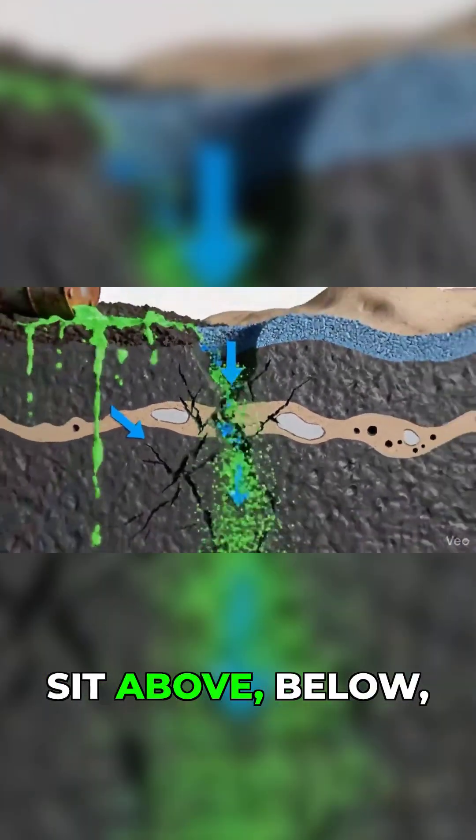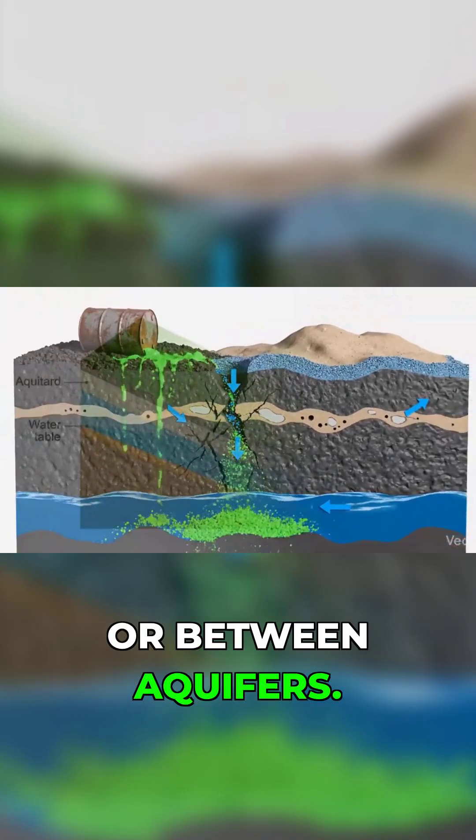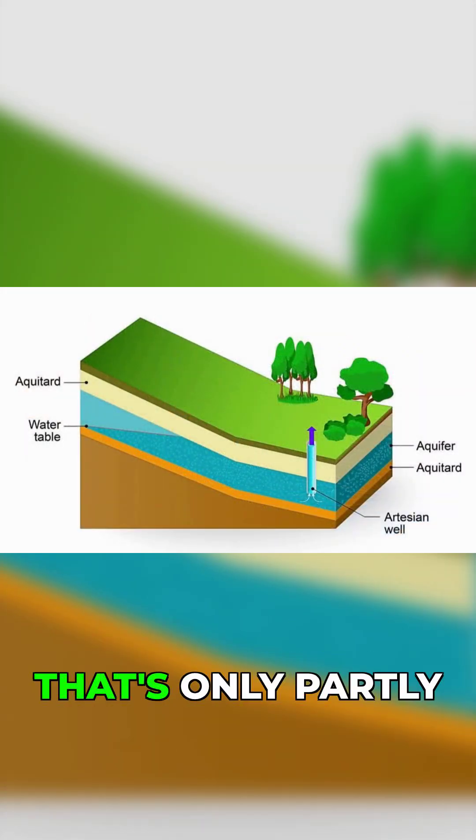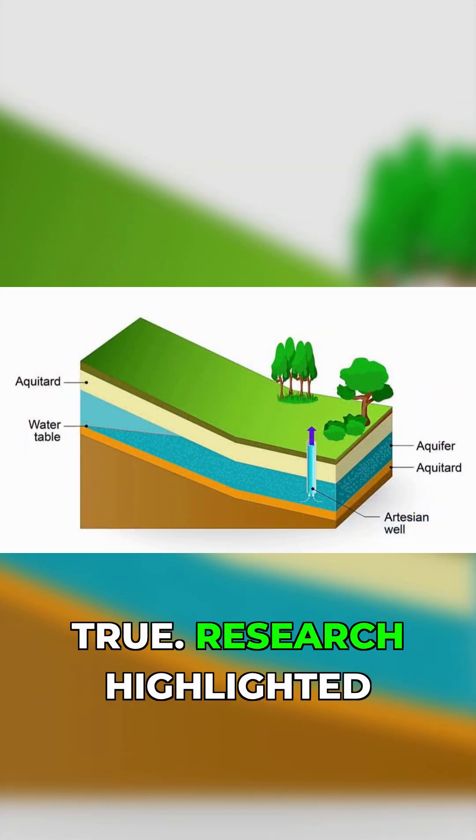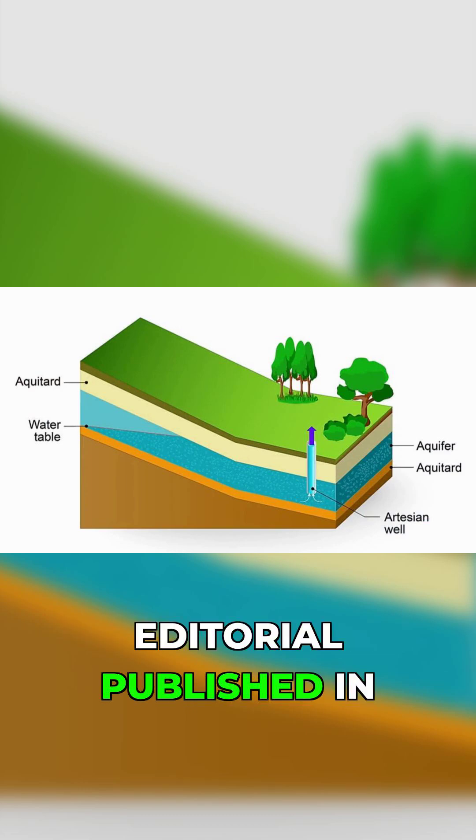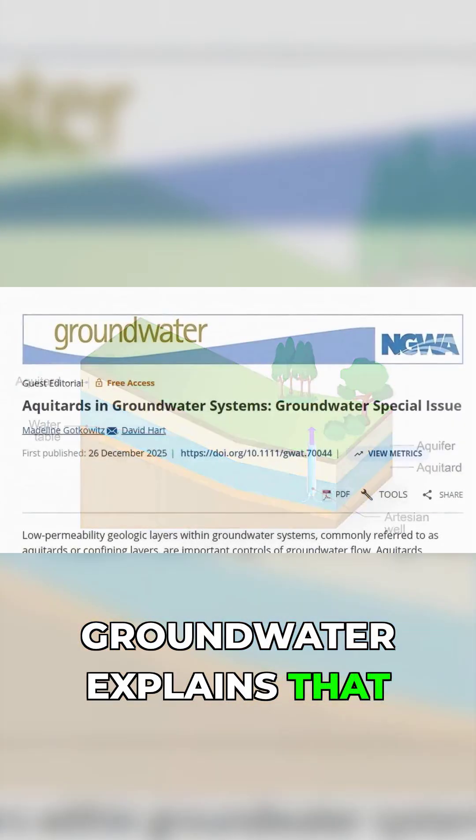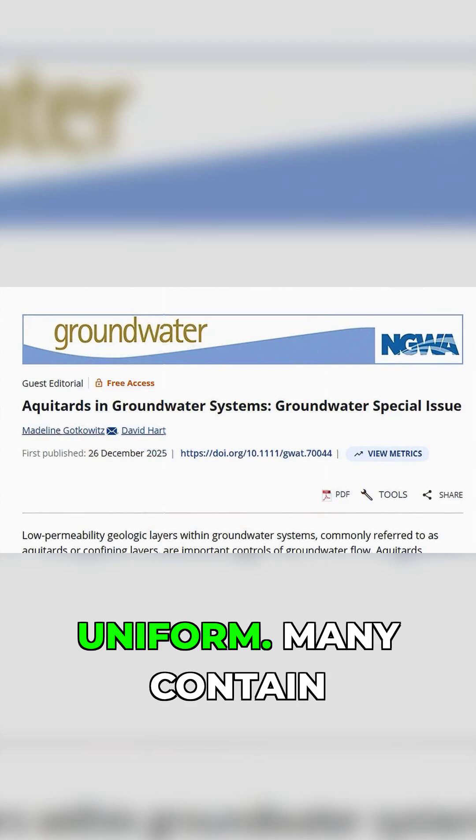Aquitards sit above, below, or between aquifers. They're often described as barriers, but that's only partly true. Research highlighted in a guest editorial published in Groundwater explains that aquitards are rarely uniform.